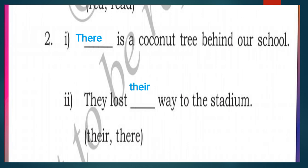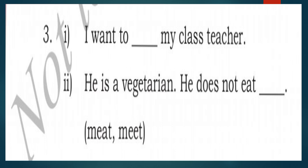Question three: first blank: I want to __ my class teacher. Second: he is a vegetarian, he does not eat __. The words are M-E-E-T (meet) and M-E-A-T (meat). Answer: I want to MEET my class teacher. He is a vegetarian; he does not eat MEAT.